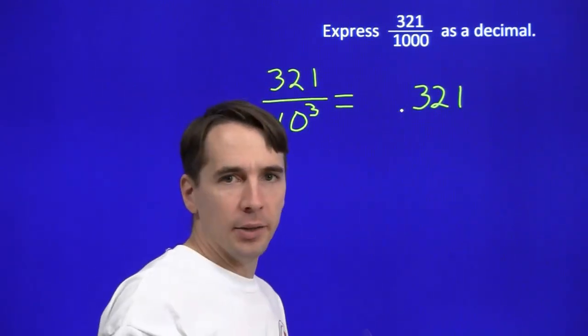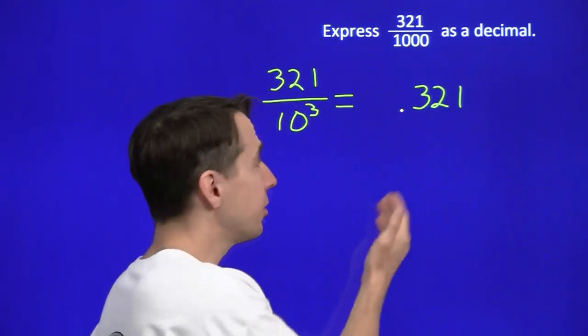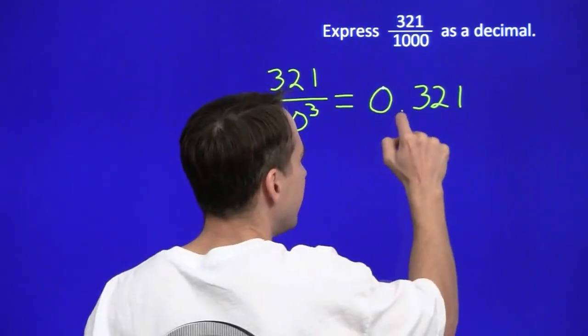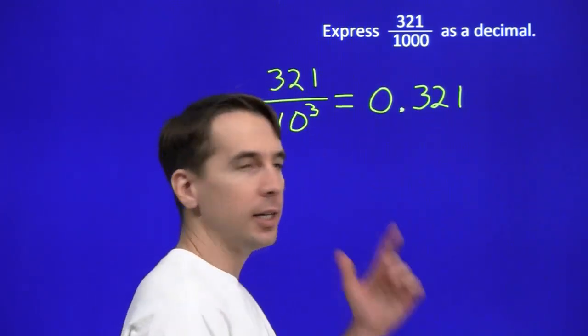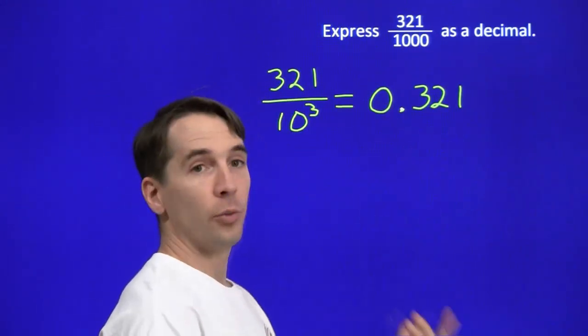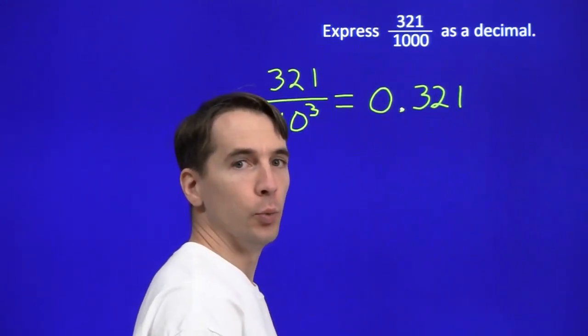Now an old guy like me has trouble picking out the decimal point sometimes when there's nothing to the left of it, so I like to put a leading zero there. It makes it clear that there's a decimal point hiding right here. So our 321 over 1,000, 321 thousandths is 0.321.